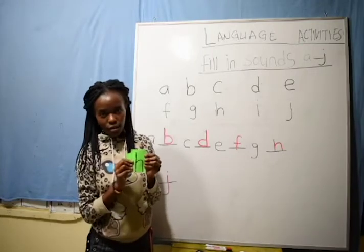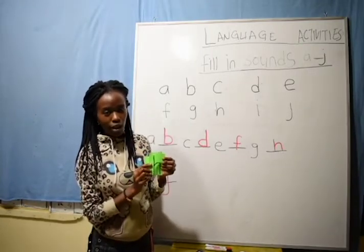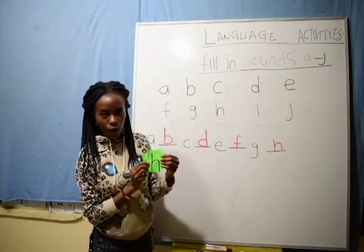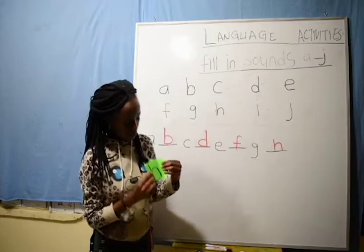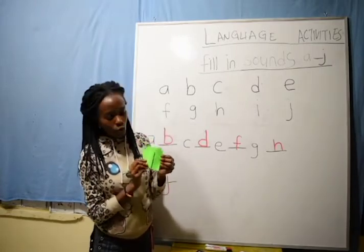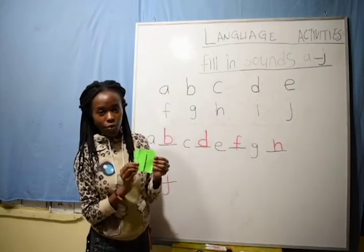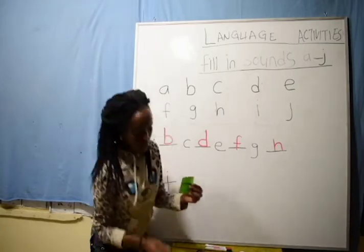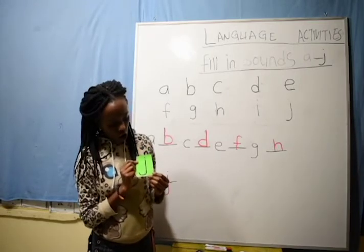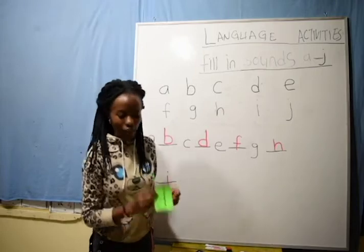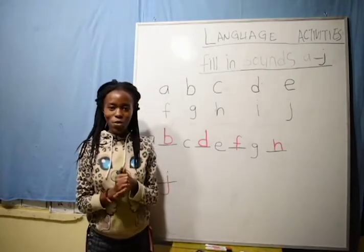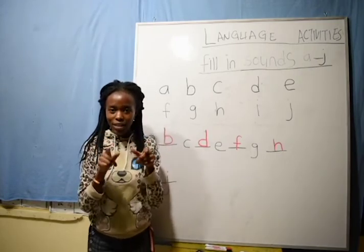Sound H — can you say sound H? Ha. Very good. This one is sound H for heart. Sound I — E for ink. E for ink. The last one, I have sound J — ju for jet. Very good. Clap for yourself. Well done, well done. You are a star. You are a star.